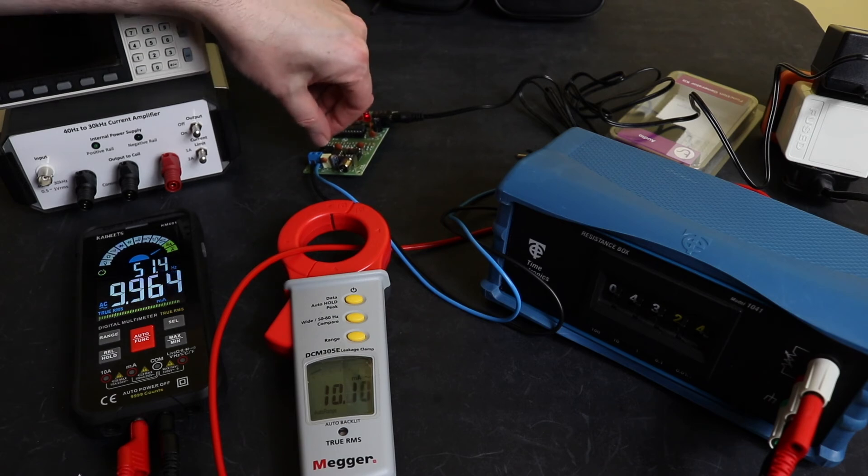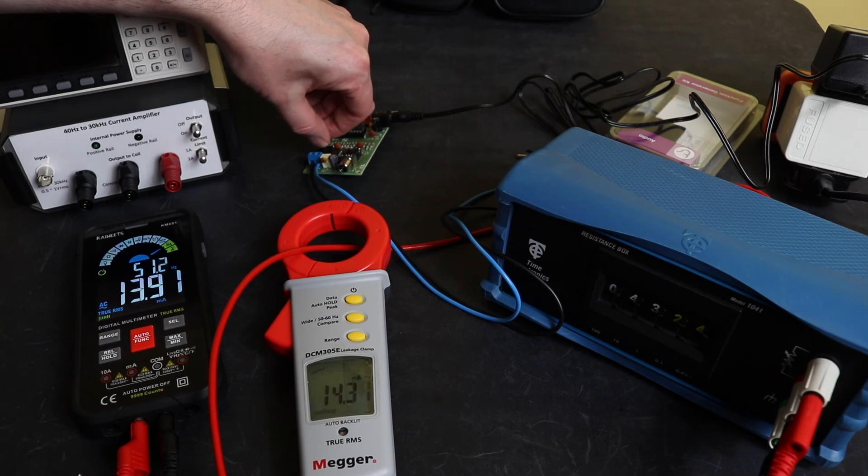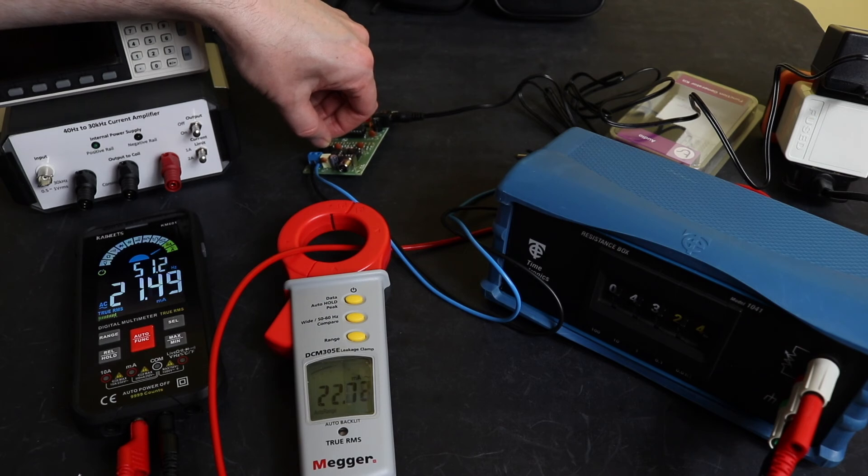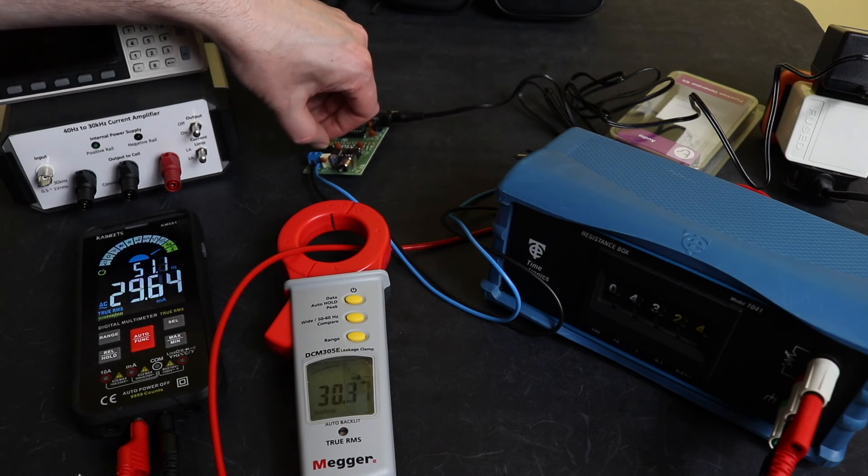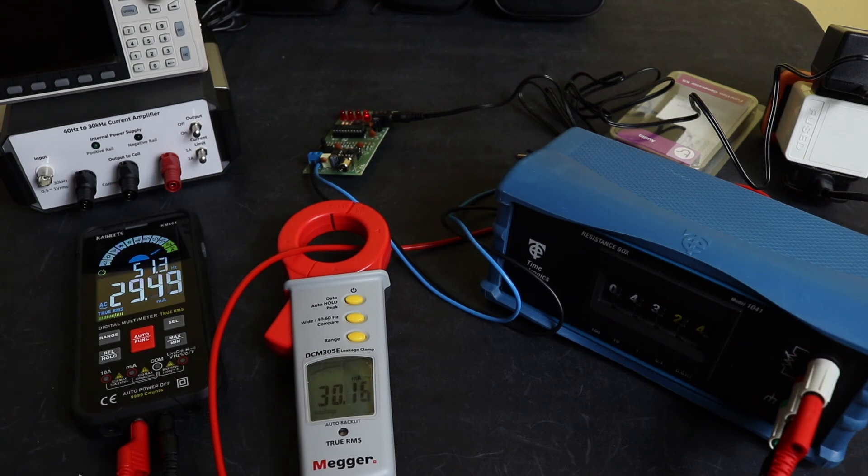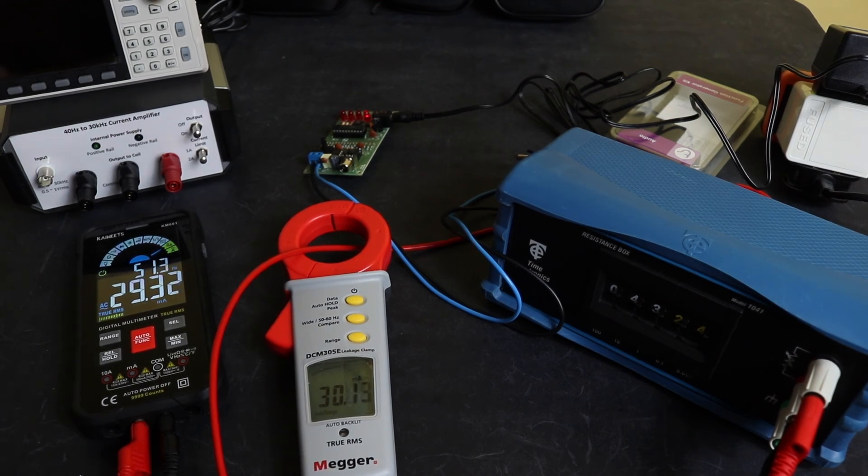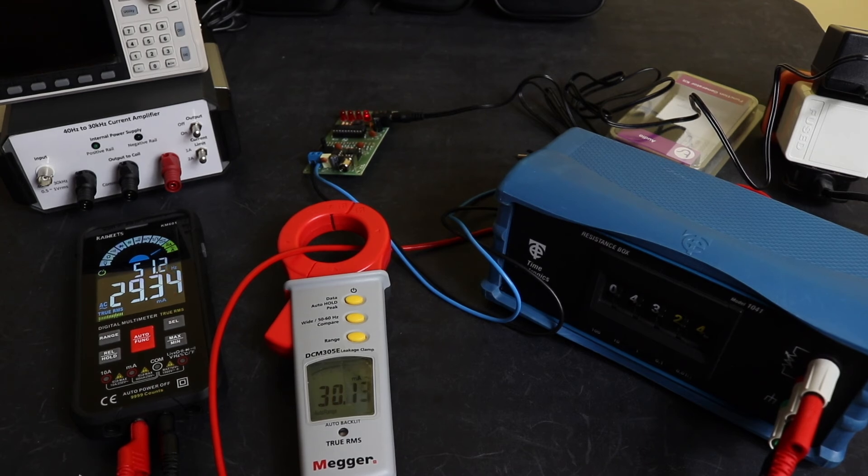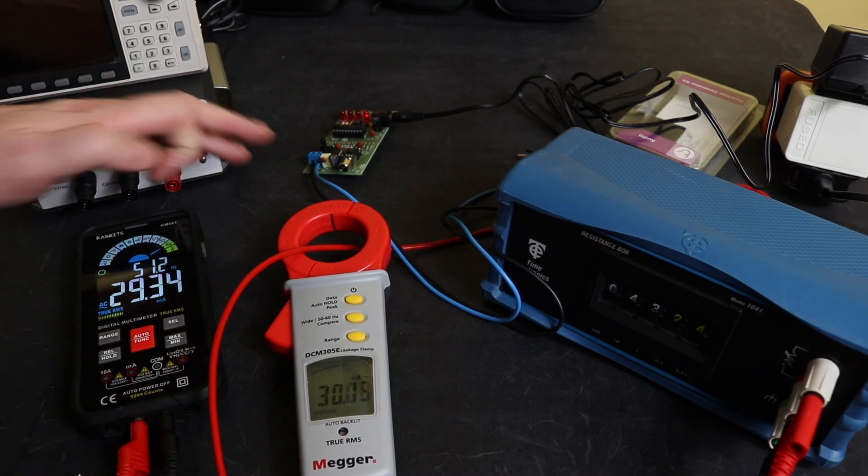You can see it's perhaps not quite as stable as a true function generator, but that's the difference between the costs I guess. But again I can tweak this up, this has got a built-in volume control. I've got 21.6 milliamps there, 21.07, 20.05. You can get 30 milliamps on this one as well. There you go, 30 milliamps there, 29.31 on KM601.